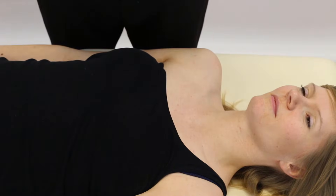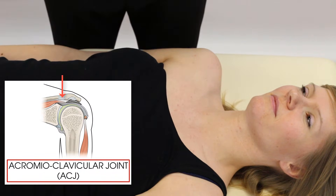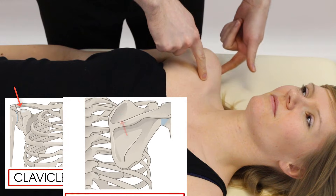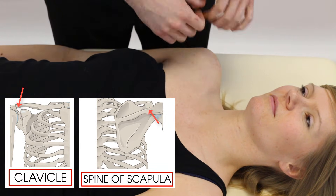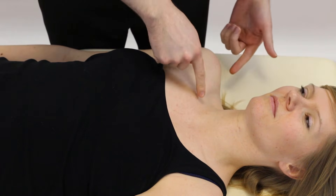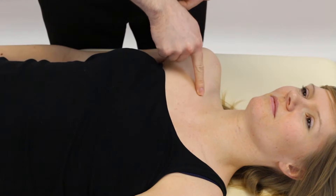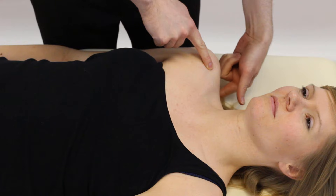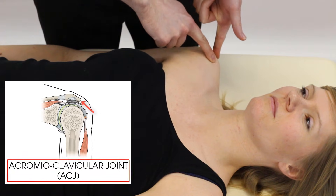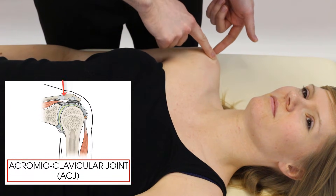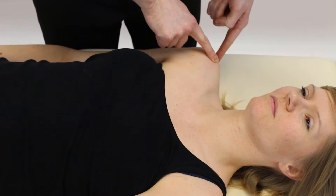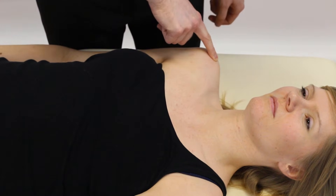We're going to look at palpation of the ACJ — the acromioclavicular joint. The ACJ is the articulation between the clavicle and the spine of the scapula where they meet, and its main role is to start spinning and gliding when the shoulder is in higher degrees of abduction and elevation. To feel it, trace the clavicle around and feel the spine of the scapula. Coming around to the lateral border of the acromion, you'll feel a gap — this is where the clavicle meets the acromion.